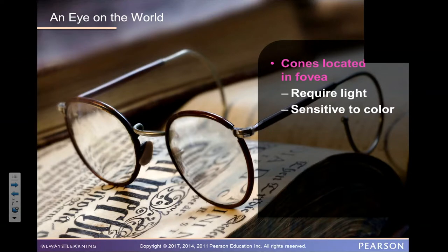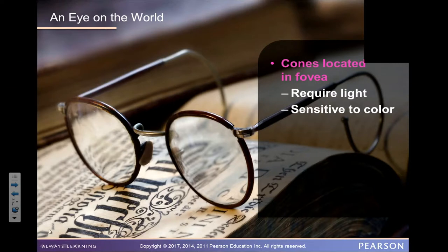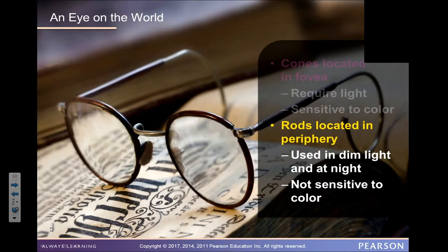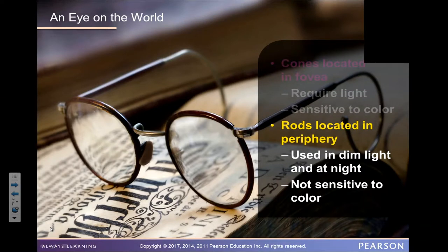Cones are located in the fovea, require light, and are the part of the eye sensitive to color — were it not for our cones, we would be color blind. Cones are how we perceive color. Rods are about light perception; they are located in the periphery of the eye, used in dim light and at night, and are not sensitive to color. The darker the environment, the more our rods are called to action.